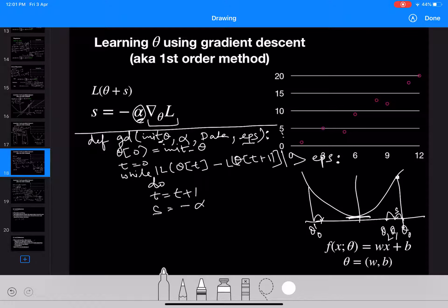s is equal to minus alpha times the gradient of L with respect to theta. And theta t is equal to theta t minus one plus s. We'll end the loop and then we'll return the last parameter, return theta t.